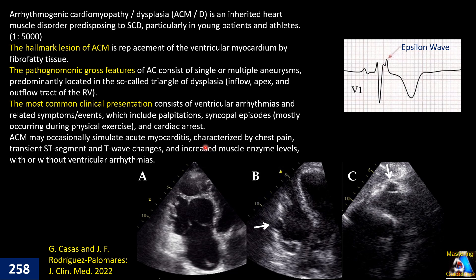Another finding in this group of cardiomyopathy is EKG abnormality. There are various spectrum changes on EKG, but one characteristic feature of arrhythmogenic cardiomyopathy is the epsilon wave, represented as a positive spike just after the QRS at the beginning of the ST segment on the right precordial leads, specifically V1. However, it is not highly specific or sensitive.